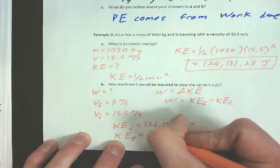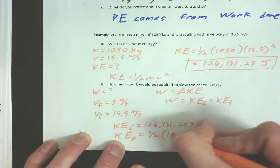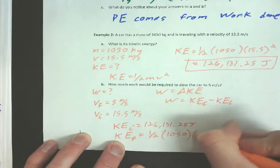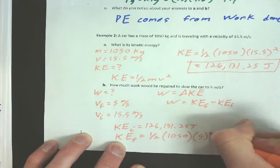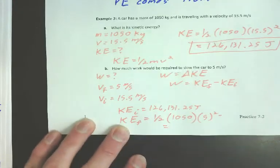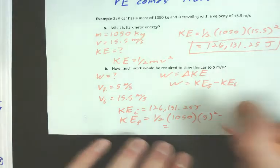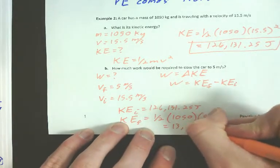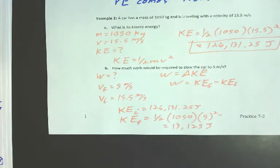The kinetic energy at the end we need to find, that's one half times the mass, which is 1050, times the velocity at the end, which it says it slows it to five meters per second. So, that gives me a value of 13,125 joules. So, now I'm ready to solve this. Work equals final minus initial.